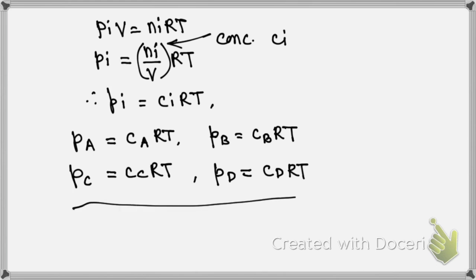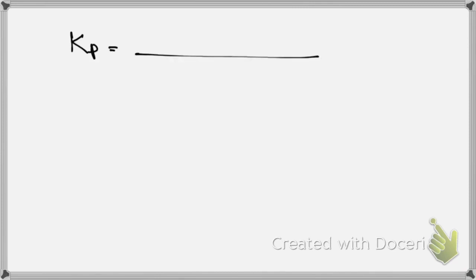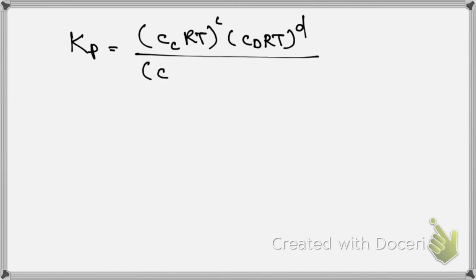Now I will substitute the values of the pressures into the equilibrium constant equation. Therefore, Kp equals CC into RT to the power c, multiplied by CD into RT to the power d, divided by CA into RT to the power a, and CB into RT to the power b.